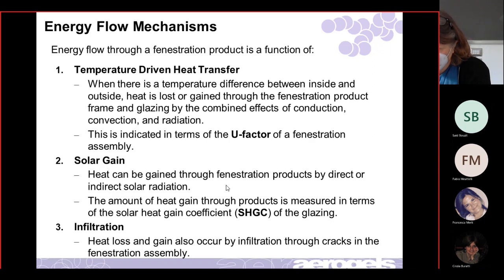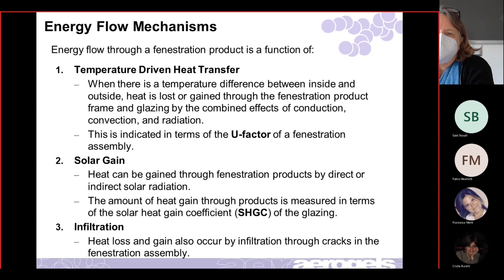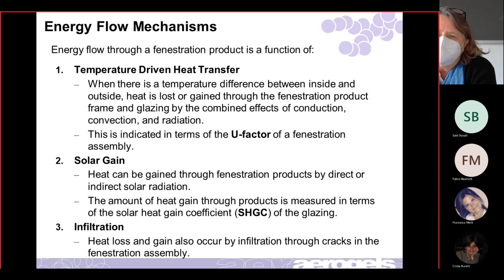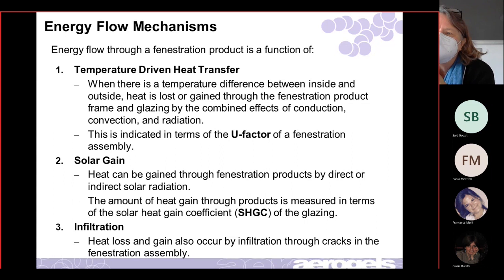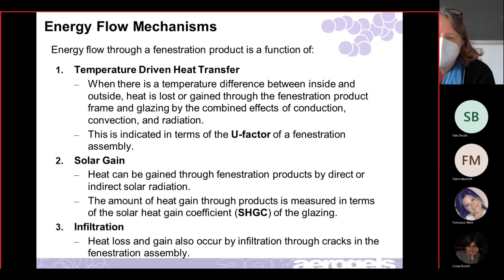Energy flow through a window is a function of temperature-driven heat transfer, solar gain, and infiltration. A temperature difference between inside and outside means heat is gained or lost through the glazing — what we call the window assembly — as well as the frame. This happens through conduction, convection, and radiation. The main value we use to describe how good a fenestration system is is the U-factor.